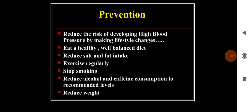To prevent hypertension, reduce the risk of developing high blood pressure by making lifestyle changes: eat a healthy and well-balanced diet, reduce salt and fat intake, exercise regularly, stop smoking, reduce alcohol and caffeine consumption to recommended levels, and maintain a healthy weight.